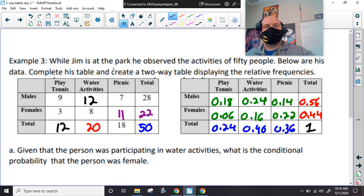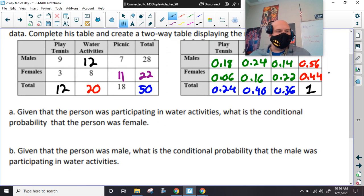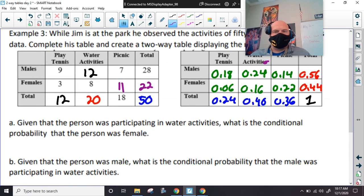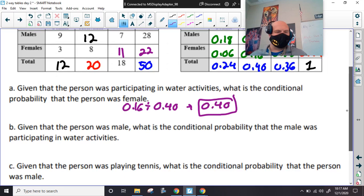All right. So, we got the chart. Now, we're ready to answer questions. All right. So, given that person was in water activities, so that's going to be this one right here. So, we're going to be divided by 0.40. What's the probability that they were female? So, 0.16. So, 0.16 divided by 0.40. That's weird. 0.40. That's suspicious. That's suspicious.